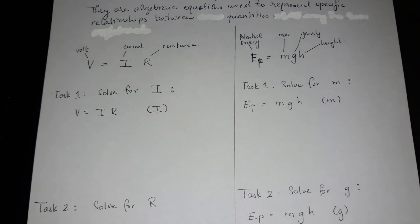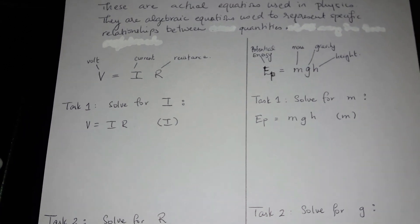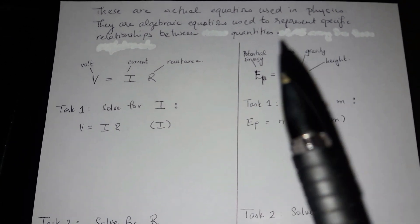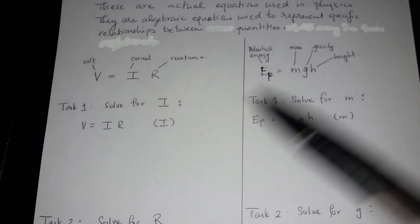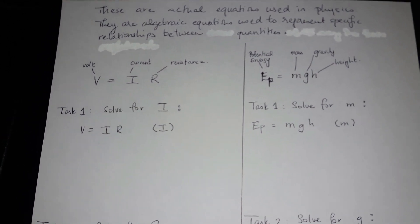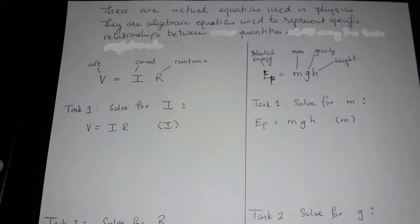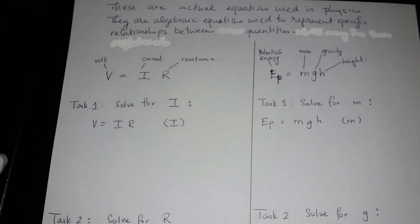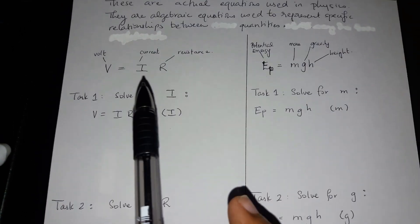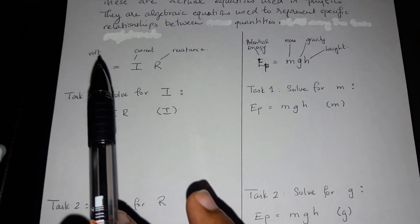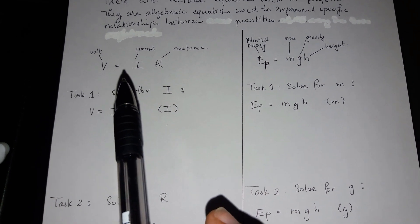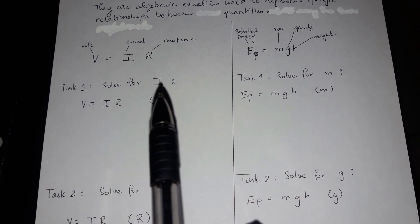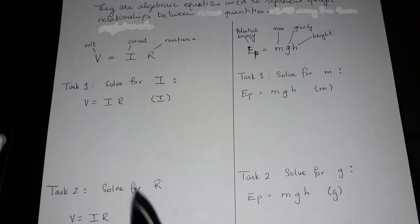As promised, here I am showing you some examples for transposing fractions. These are actual equations used in physics — algebraic expressions or equations used to represent specific relationships between quantities. The first one we're going to do is V equals to I times R, where the voltage or potential difference is equal to the current times the resistance. Our first task will be to solve for I.